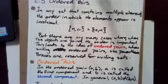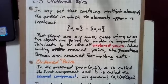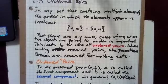In this video we'll look at ordered pairs. In any set that contains multiple elements, the order in which the elements appear is irrelevant. So the set {n,o} is equal to the set {o,n}.